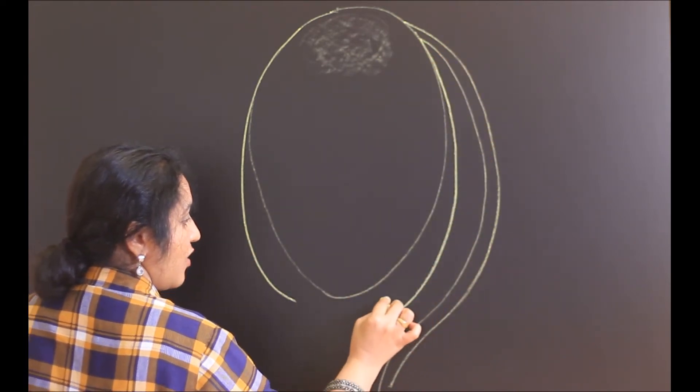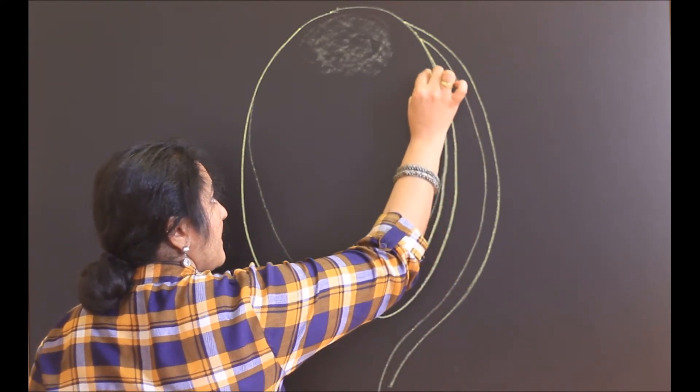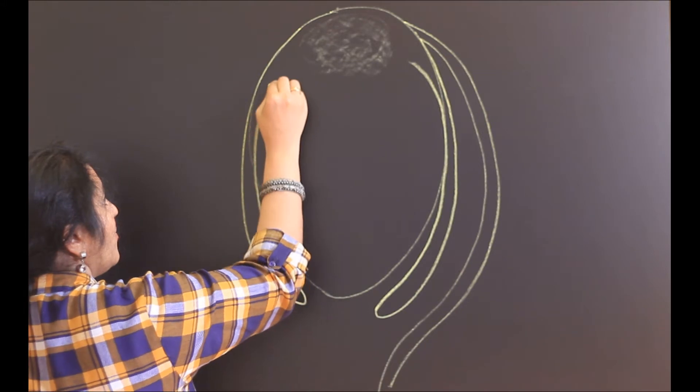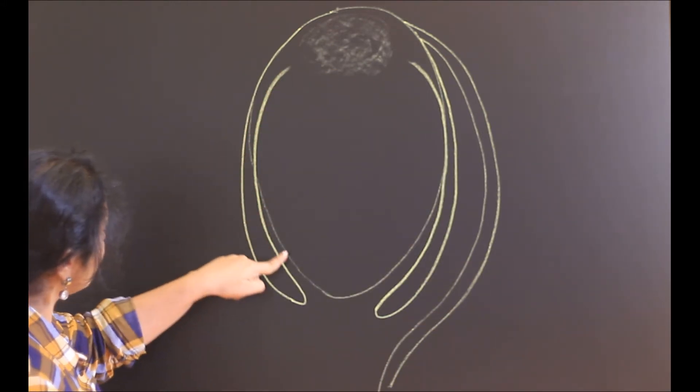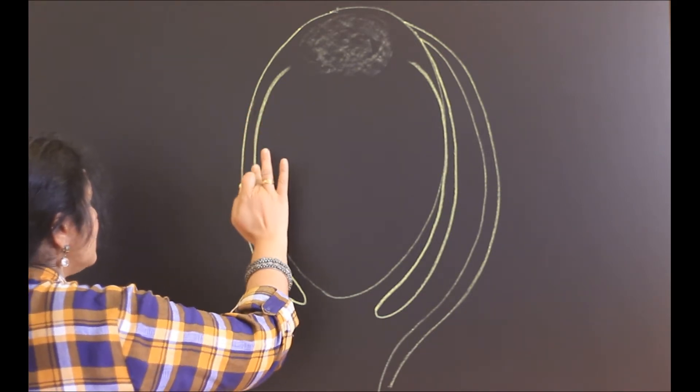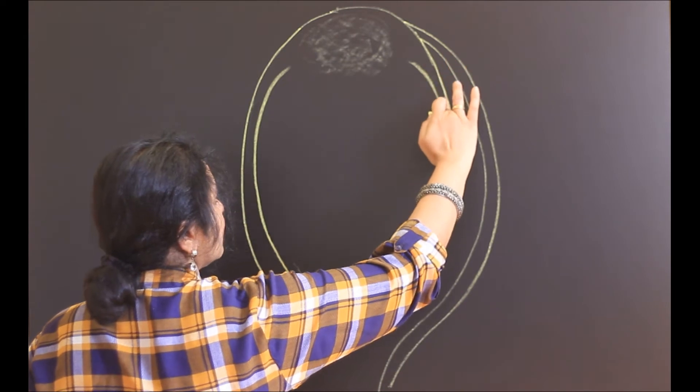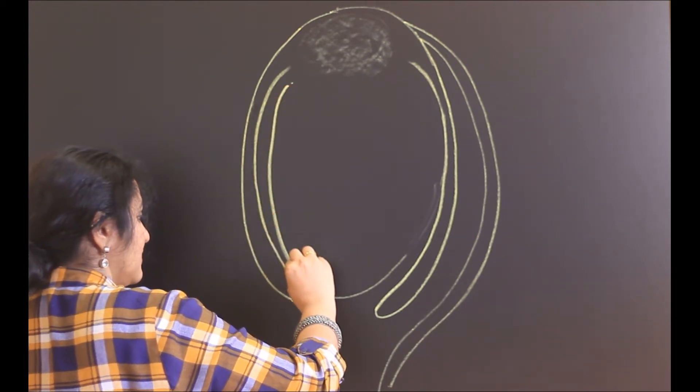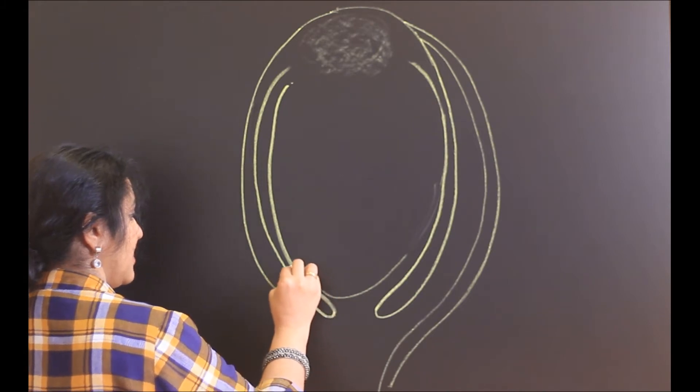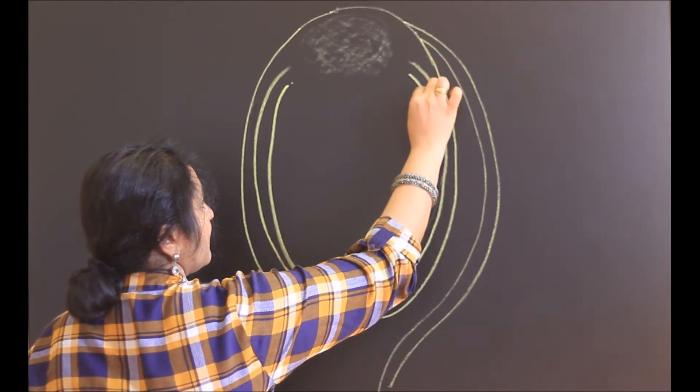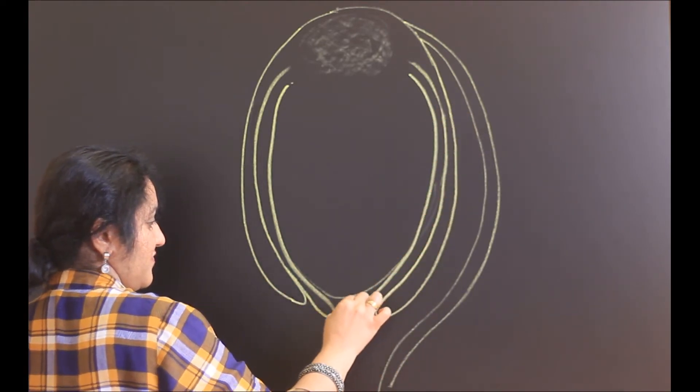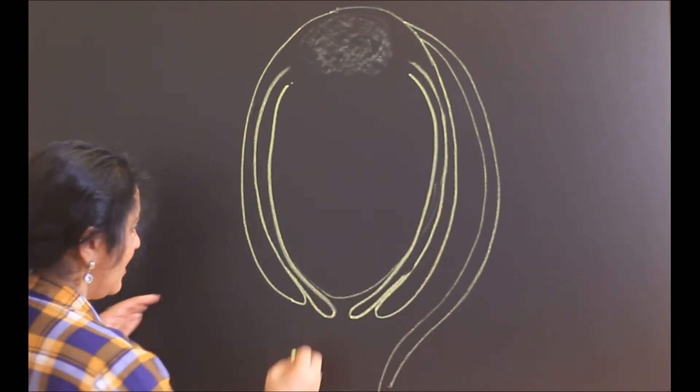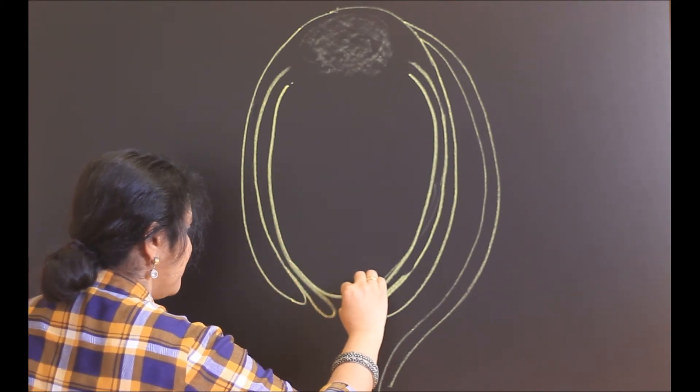This is the outer integument. This is the outer integument on the right side. Now what has to be done? These lines can be cleared. The inner integument also forms from the chalaza and it joins here. It's the inner integument. Clear all these extra lines. Make this line much more clear.